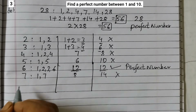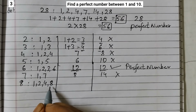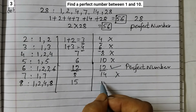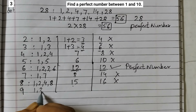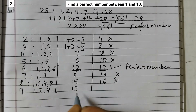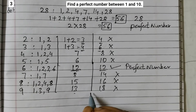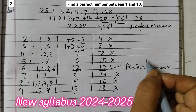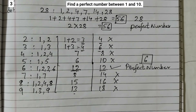Let's check 7: factors are 1 and 7, sum=8, and 2×7=14. Not the same. Factors of 8: 1, 2, 4, 8, sum=15, and 2×8=16. Not the same. Factors of 9: 1, 3, 9, sum=13, and 2×9=18. Not the same. So the only perfect number between 1 and 10 is 6.